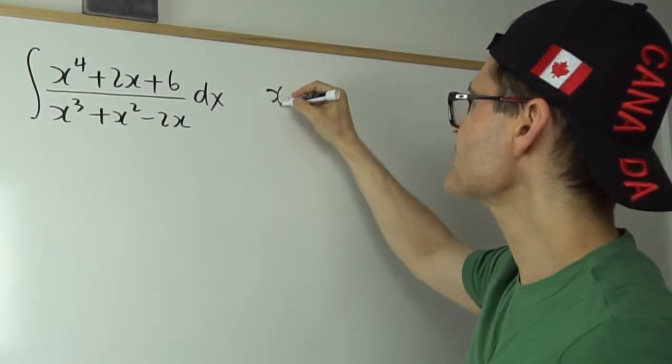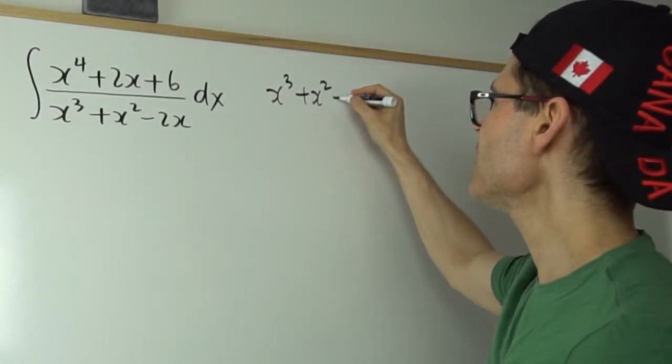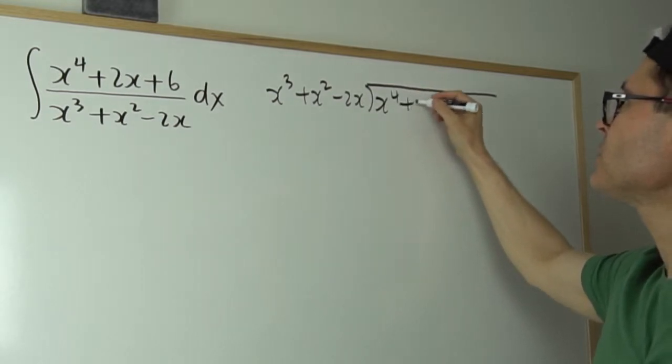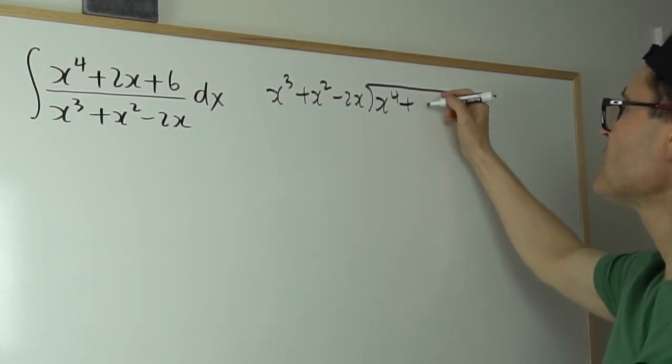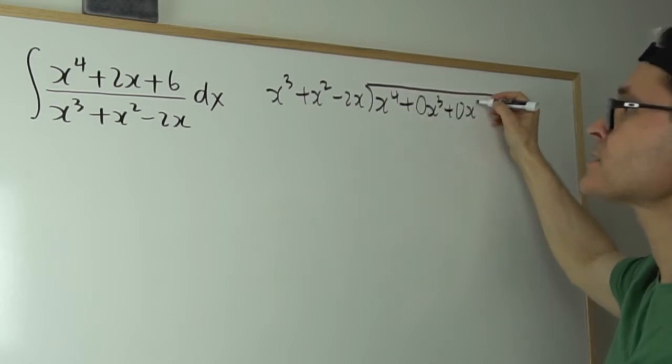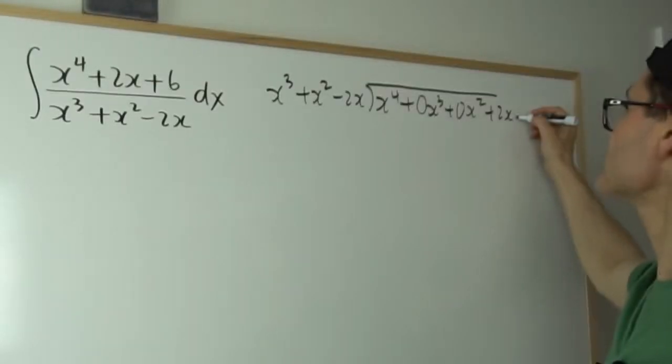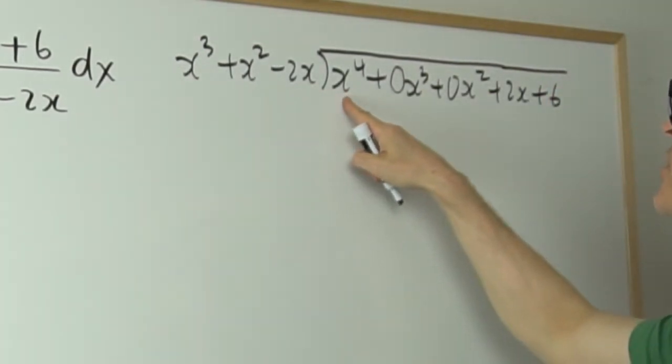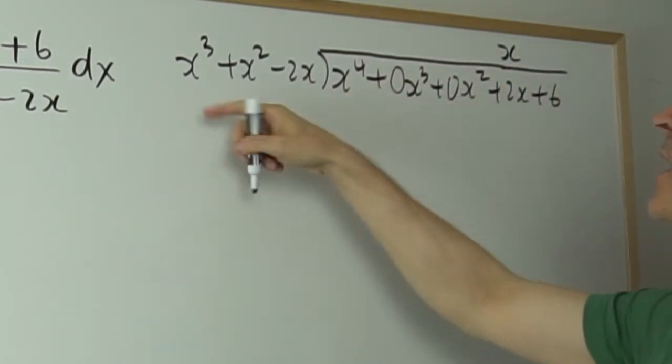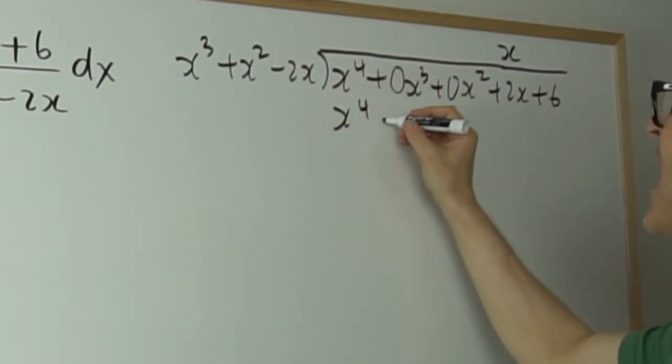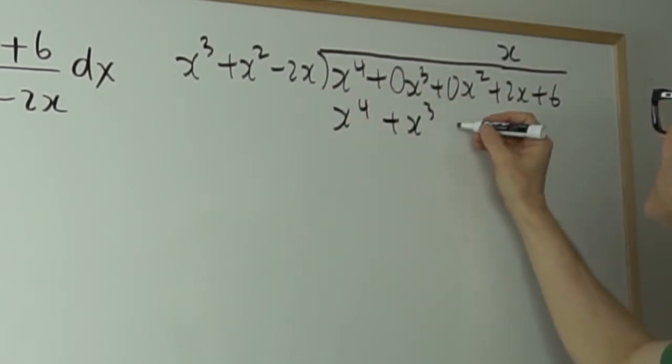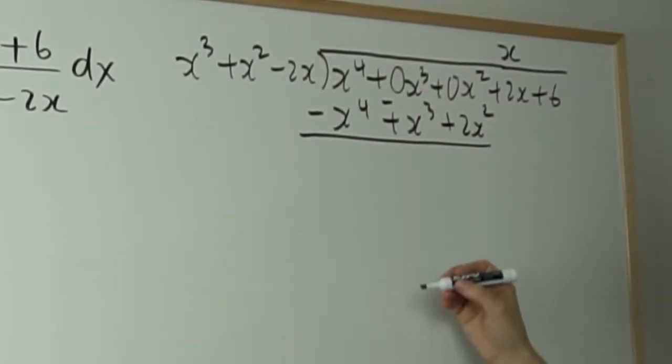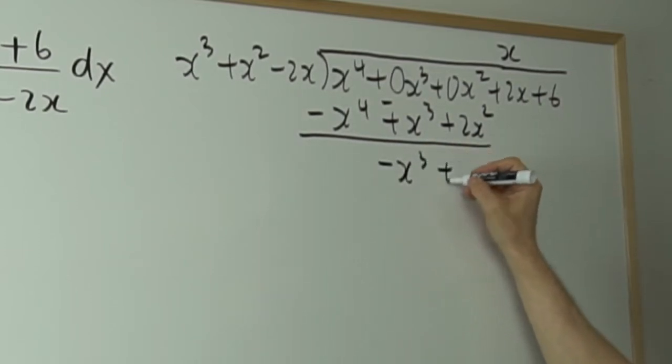So what I'm going to do is just say, x cubed plus x squared minus 2x. If I divide that into the quartic, x to the 4 plus, I'll even put some extra powers in. So 0x cubed plus 0x squared plus 2x plus 6, just so I've got some space to do my division. x cubed goes into x to the 4 x times. So I'll put an x right here. x times this is x to the 4, x times that is x cubed, x times negative 2x is negative 2x squared. I'm going to do a takeaway. So subtract, subtract, add, add vertically.